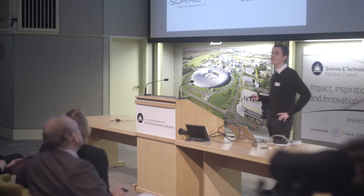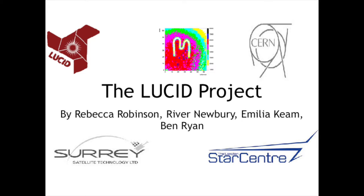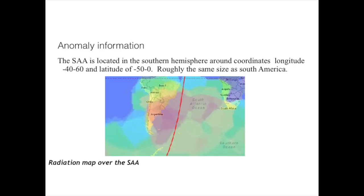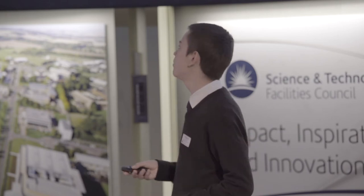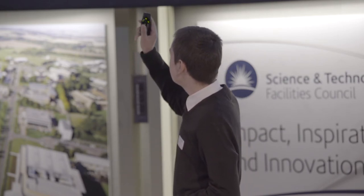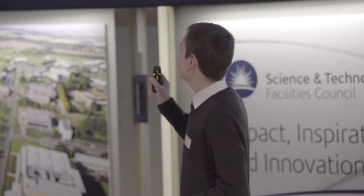Hi, I'm River from Simon Langton Boys. Before we tell you what our presentation is actually about, I want to introduce the South Atlantic Anomaly, which we're doing our research project on. As you saw from the previous presentation, the South Atlantic Anomaly is an area just off the coast of South America that gets far more radiation than expected, and nobody really knows the exact reason why. It's located between negative 50 and zero degrees latitude and negative 40 and 60 degrees longitude.